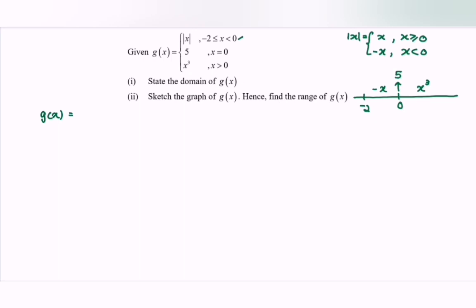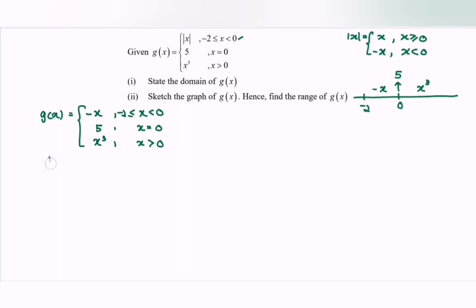So the piecewise function g(x) is: negative x for x in [−2, 0), then 5 for x equals 0, then x cubed for x greater than 0. As for the domain, we have x greater than or equal to negative 2, so the domain for g is negative 2 until infinity.